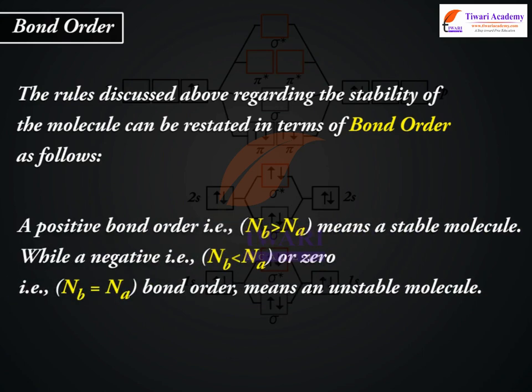A positive bond order, i.e., Nb greater than Na, means a stable molecule, while a negative, i.e., Nb less than Na, or zero, i.e., Nb equal to Na, bond order means an unstable molecule.